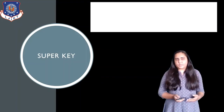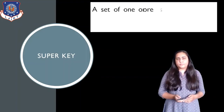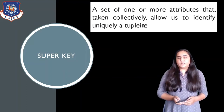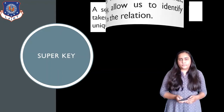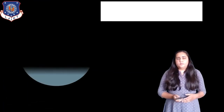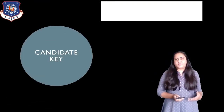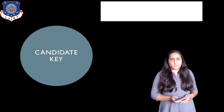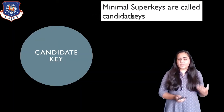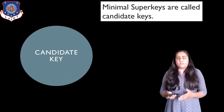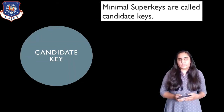Now I'm going to explain what a super key is in a relational model. A super key is a set of one or more attributes that, taken collectively, allow us to uniquely identify a tuple in the relation. A candidate key is a minimal super key. Let's see an example for both together.